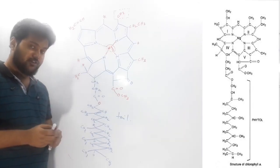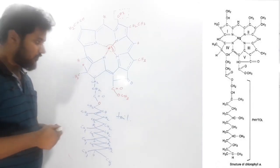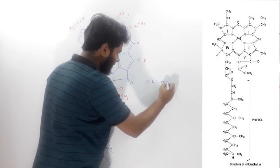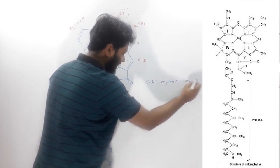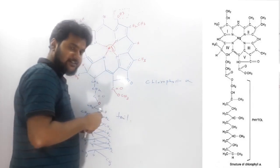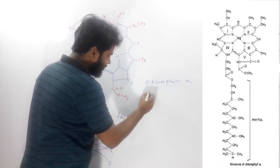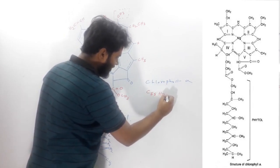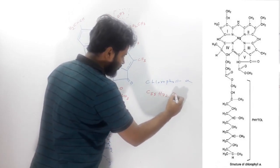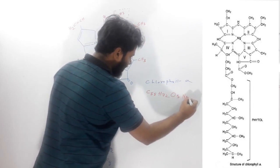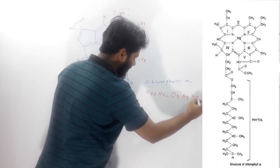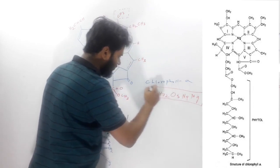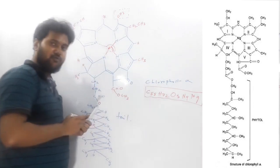The molecular formula of chlorophyll A is C₅₅H₇₂O₅N₄Mg.